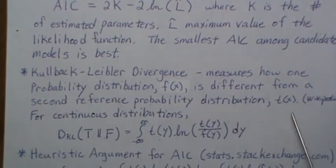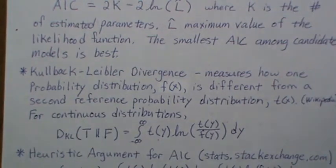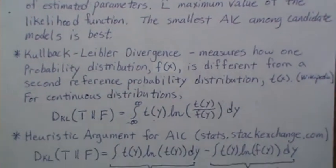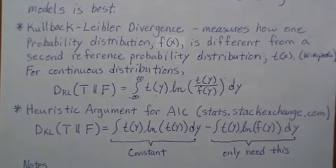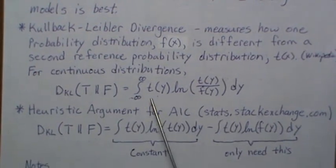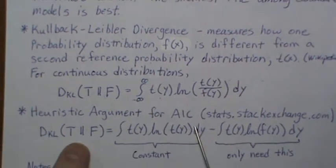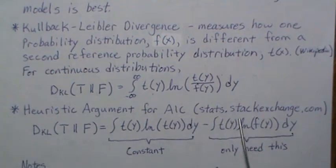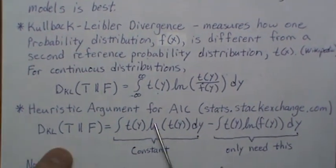This is what's called an asymmetric measure of divergence because the log is not symmetric. Here's the heuristic argument behind AIC, keeping in mind this is our goal—the Kullback-Leibler divergence. A lot of this I got from Stack Exchange.